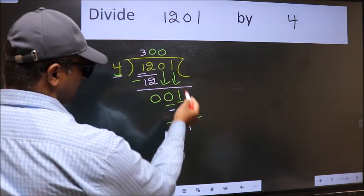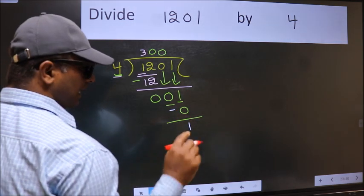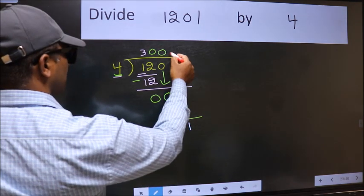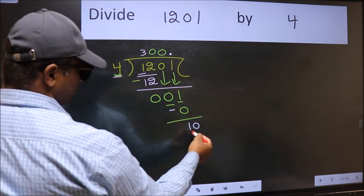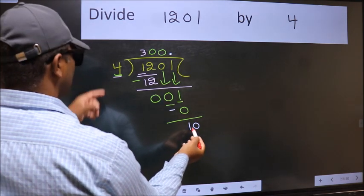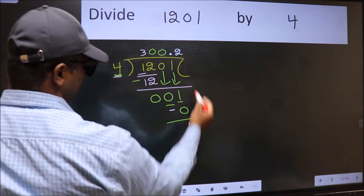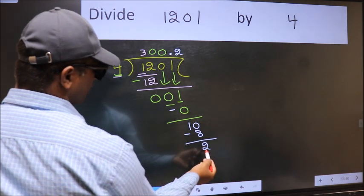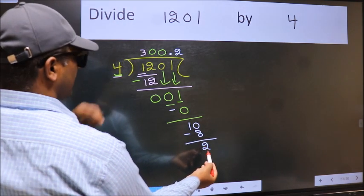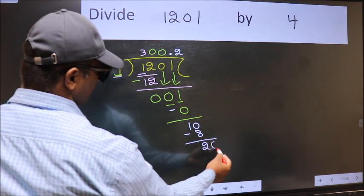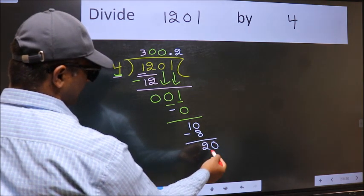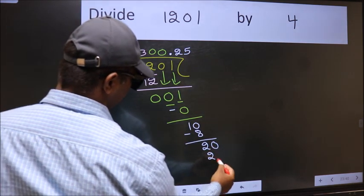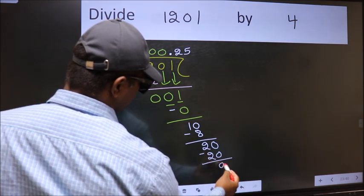Over here, we did not bring any number down, and 1 is smaller than 4. So now we can put dot and take 0. So 10. A number close to 10 in 4 table is 4 times 2 is 8. Now we should subtract, we get 2. 2 is smaller than 4, and we already have the decimal, so directly take 0. So 20. When do we get 20 in 4 table? 4 times 5 is 20. Now we should subtract, we get 0.